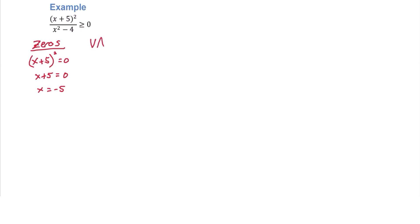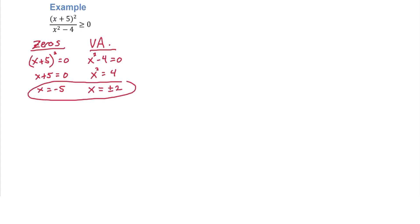Next, we'll find vertical asymptotes. To do that, we set the denominator equal to zero and solve. Add 4 to both sides and then square root both sides. x is plus or minus 2. These values we will call boundary points. We'll put those boundary points on a number line. Make sure you put those boundary points in order. We have negative 5, negative 2, and positive 2.